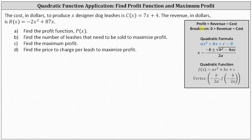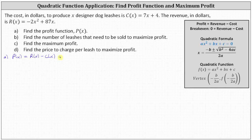Recall profit is equal to revenue minus cost, and therefore the profit function p of x equals r of x minus c of x. For part a, p of x equals the revenue function minus the cost function, which gives us the quantity negative 2x squared plus 87x, minus the quantity 7x plus 4.